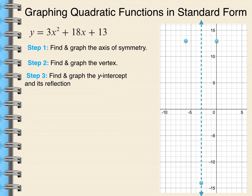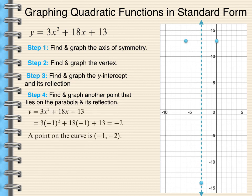And finally, I want to find one other point. And I like to use pretty convenient numbers. So maybe I could try negative 1 for x. So I'm going to do 3 times 1, which is 3. 3 minus 18 is negative 15. Negative 15 plus 13 is negative 2. I'm going to plot negative 1 comma negative 2. And I'm also going to plot the point on the other side of that.